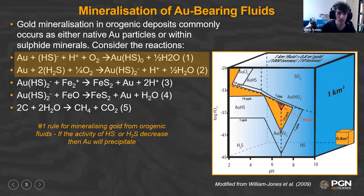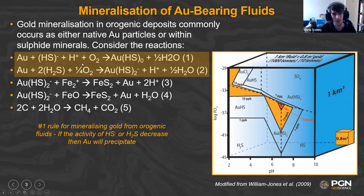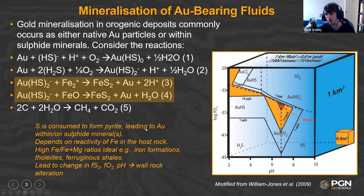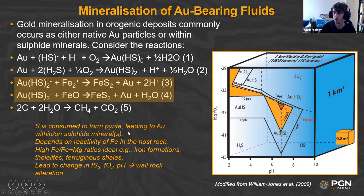I want to go over some quick mineral reactions for how gold deposits. The number one rule for making an orogenic gold deposit is to basically decrease the activity of sulfur in the fluid. Because gold is being carried around by hydrogen sulfide complexes, if you can strip that sulfur out, you can make gold deposit. The main way to do that is by forming pyrite — this is called sulfidation, and it depends on the amount of iron in the host rocks. A high iron-to-iron-magnesium ratio is good. So iron formations, tholeiites, or shales are favorable.